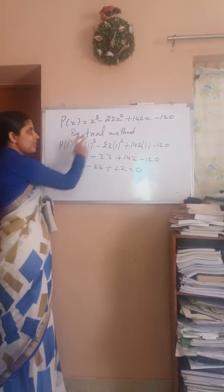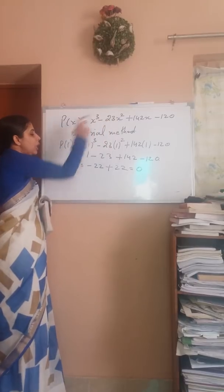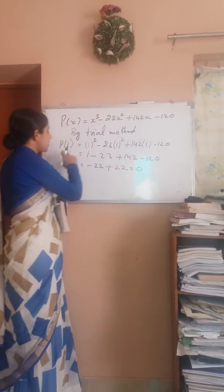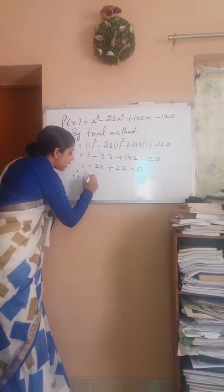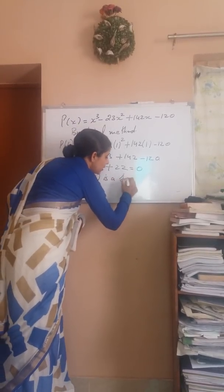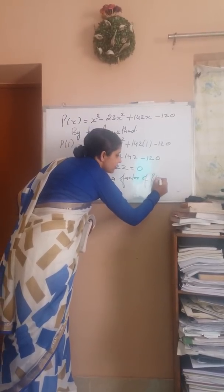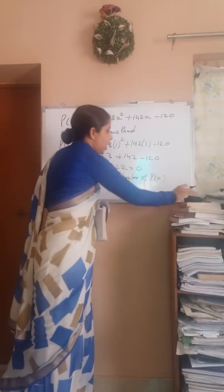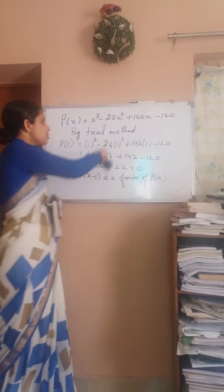That gives us -22 + 142 - 120, which equals zero. So we have seen that when placing the value of 1 in the polynomial equation, we get zero. Therefore, (x - 1) is a factor of the given polynomial p(x).